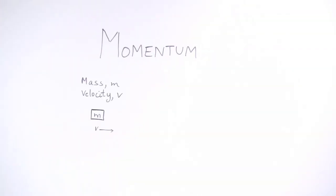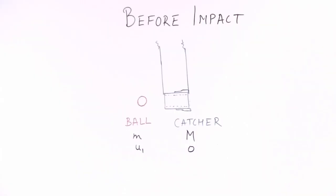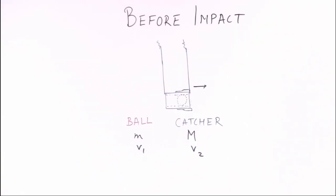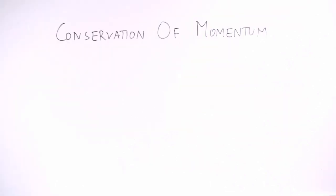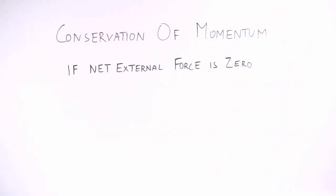Linear momentum is defined as a product of the mass of the particle and its velocity. In our experiment, initially the ball is moving with some velocity, and after the impact both catcher and the ball move with the same velocity. If there is no external force acting on the system, then the momentum of the system is conserved.